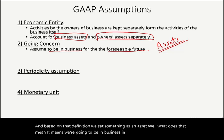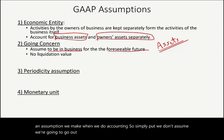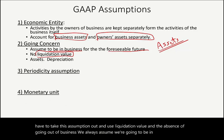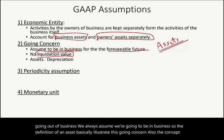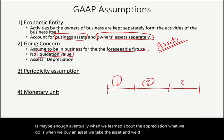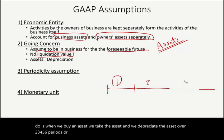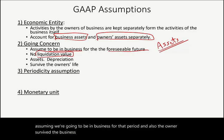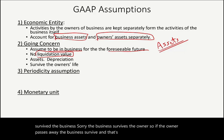Simply put, we don't assume we're going to go out of business. If we are going out of business, we remove this assumption and use liquidation value instead. In the absence of that, we always assume we're going to be in business. The concept of depreciation also illustrates going concern — when we buy an asset, we depreciate it over several years, meaning we assume we'll be in business for that period. Also, the business survives the owner: if the owner passes away, the business survives — think of Apple; Steve Jobs passed away, but Apple survived.